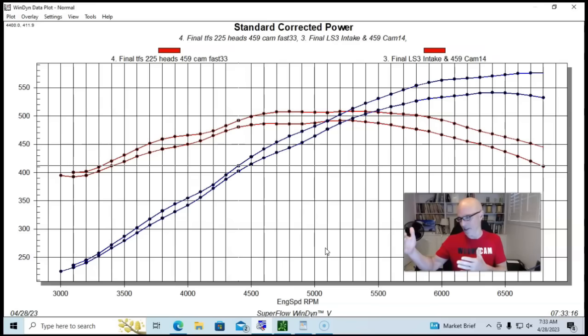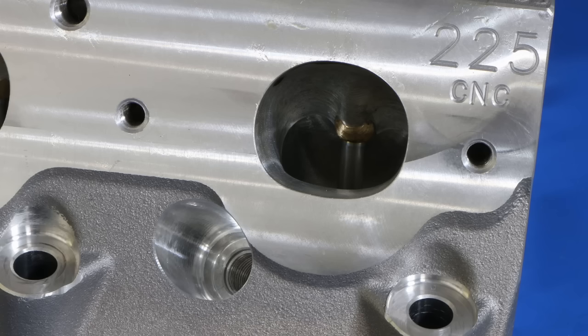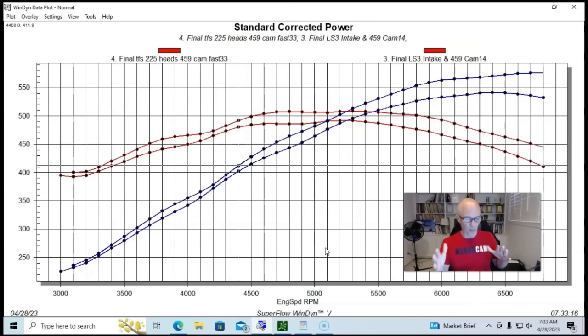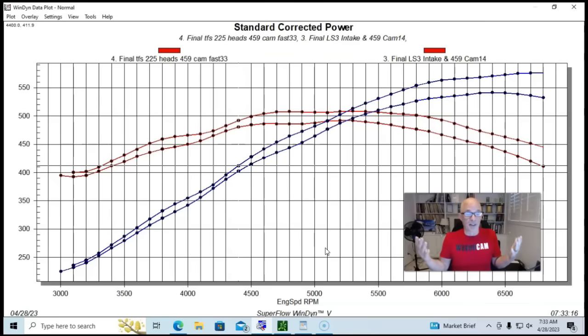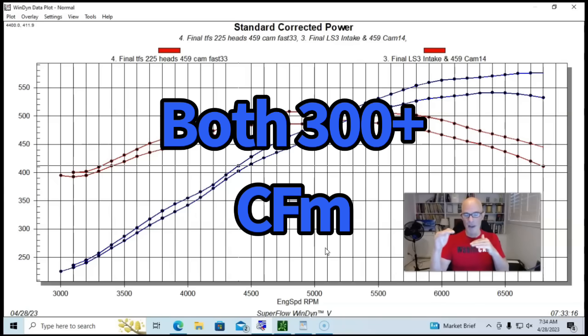So the question now is how does that compare to the factory LS3 head? We're seeing that the Trick Flow 225 head basically made more power everywhere than the factory LS3 head. Again, not surprising. It's a CNC ported aftermarket head compared to a factory head. Before this, we don't run only factory heads, but I want to show what happens when you run a ported head. And the interesting thing is all the rec port guys now are going to go, yeah, but why didn't you run a ported rec port head? Well, the reason for that is I didn't have one. But the thing is this combination didn't really need more flow.